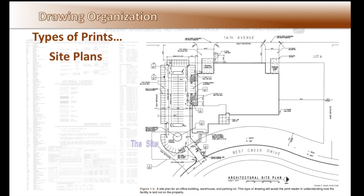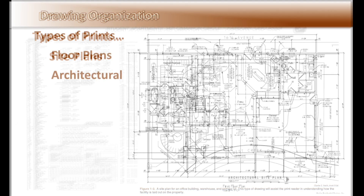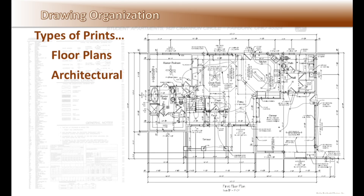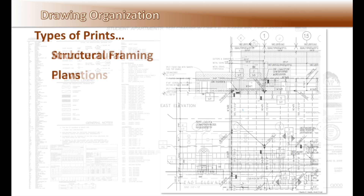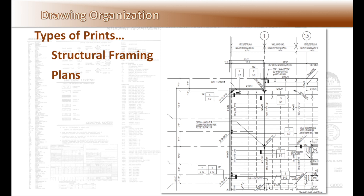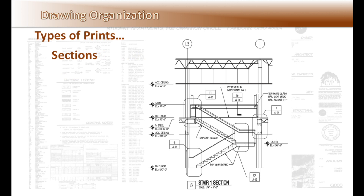Site plans cover the areas of the project outside the building structure — the parking lot, street, easements, and walkways — and are identified using the letter C. Architectural plans are designated with the letter A, as seen here with the floor plan and elevations. Structural floor framing plans are designated with the letter S. Sections are used to show how the building goes together and can be found in all sections of the construction documents. Here we are looking at a full stair section, which is also used to reference more detail sections, floor, and landing elevations.